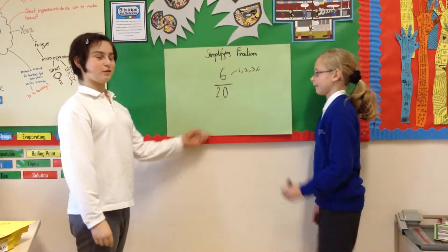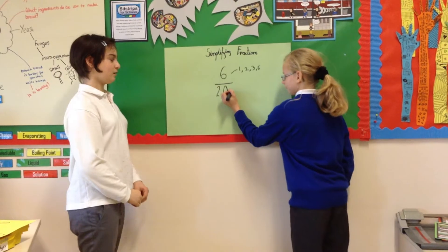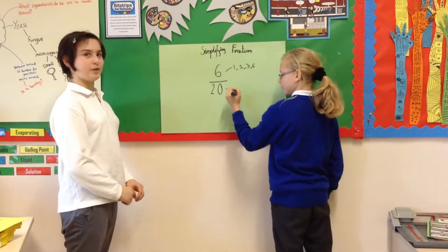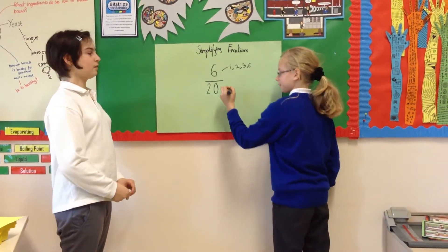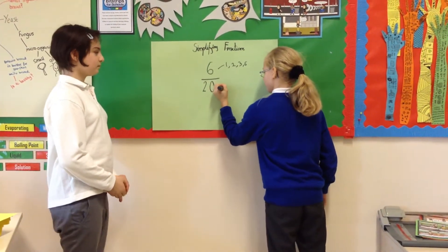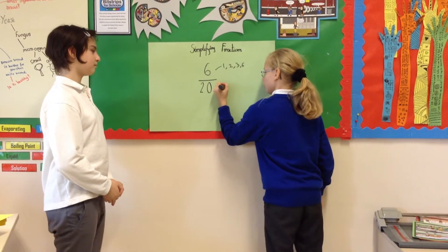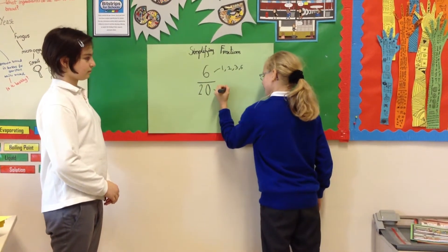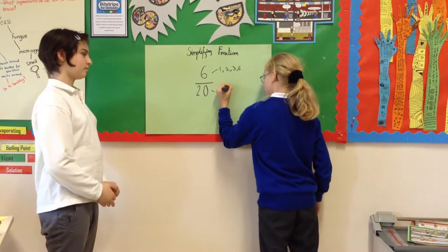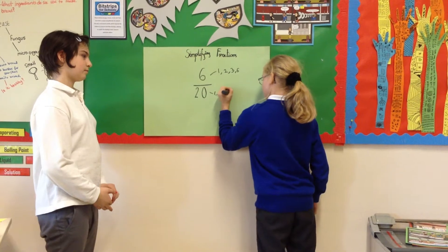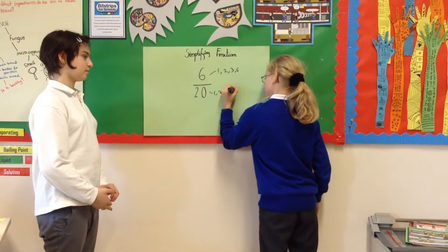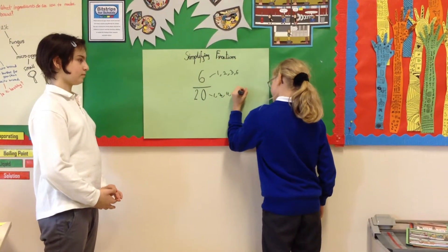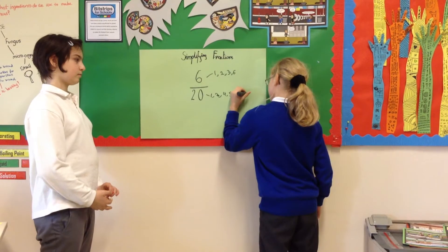Now Masha will tell you the factors of the denominator, twenty. So first you start with one, two, three, four, five, ten, and twenty.